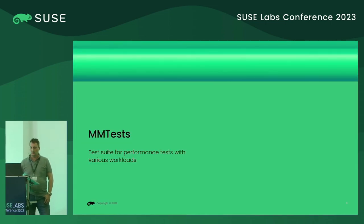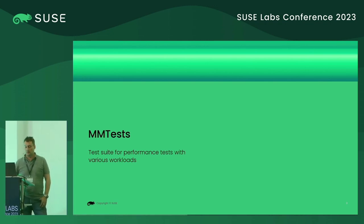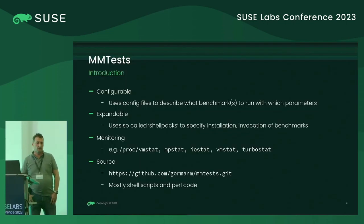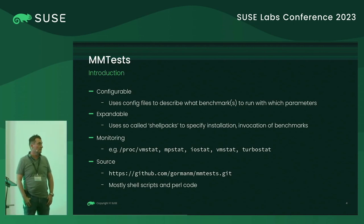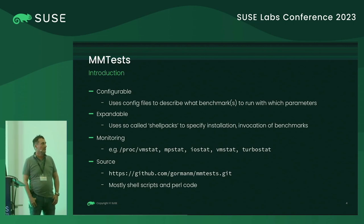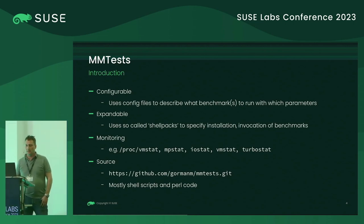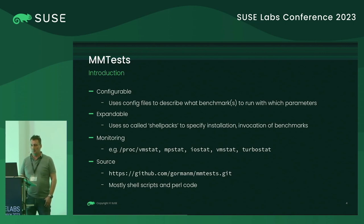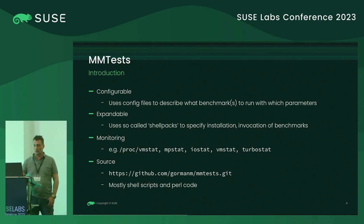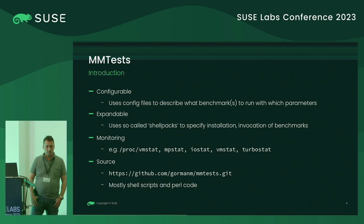MM tests is a test suite for performance tests with several workloads, and it's used within the performance team to actually do tests. It is configurable — it uses configuration files that describe what benchmarks to run with which parameters. It can be extended; it uses so-called shell pegs to specify build, installation, and invocation of benchmarks. If a new benchmark should be added, then a new shell peg needs to be written for MM tests. It supports monitoring — several proc files can be read, and tools like MP start, IO start, FBM start, turbo start, and others are supported to do monitoring in parallel to the benchmark run.